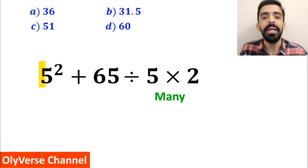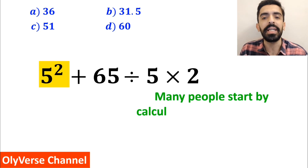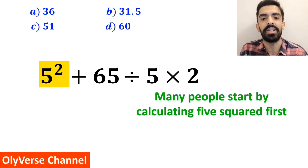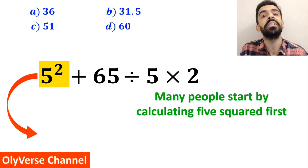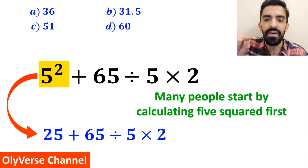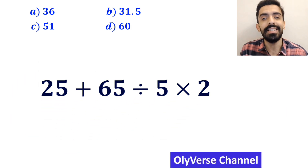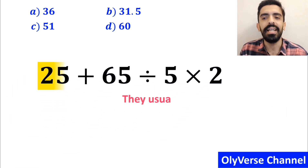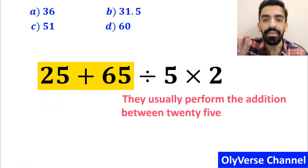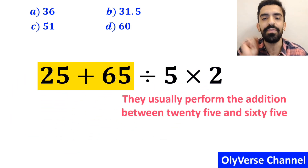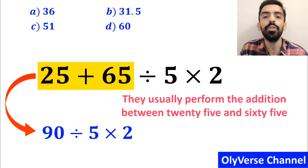To solve this problem, many people start by calculating 5 squared first, and instead of the original expression they rewrite it as 25 plus 65 divided by 5 times 2. In the next step they usually perform the addition between 25 and 65 and simplify this expression to 90 divided by 5 times 2.